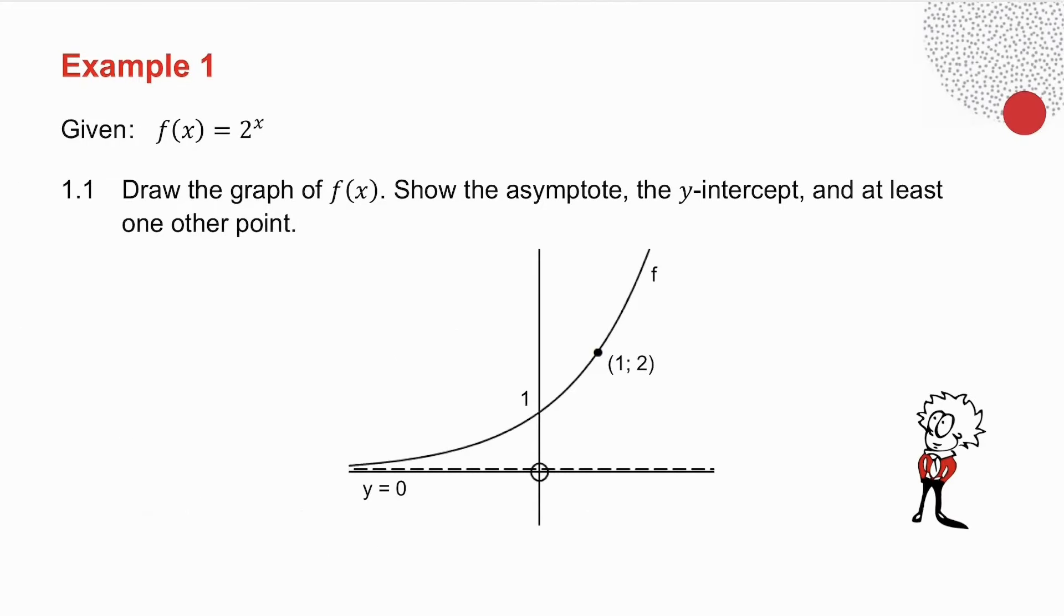In drawing the graph, notice your asymptote is y equals 0. Your y-intercept, I make x equal to 0, so your y-intercept is 1. And then I asked you to show at least one other point. So I chose to make x equals 1, and if x is equal to 1, the point that lies on the graph is 1, 2.